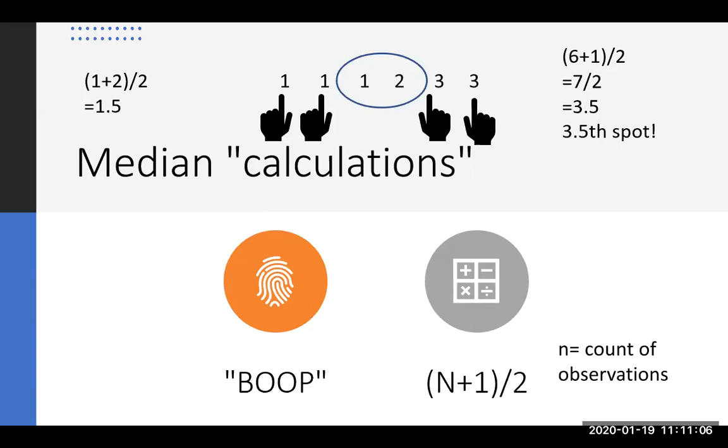So essentially, it's not that complicated if we realize, boy, it's super easy if you have an odd number of scores. But if you have an even number of scores, you just have to do the extra step of finding the number that fits between the two middle spots, and that will be the median for your data set.